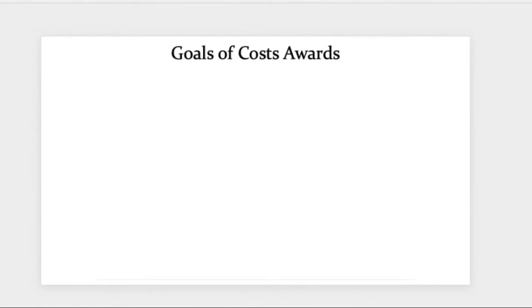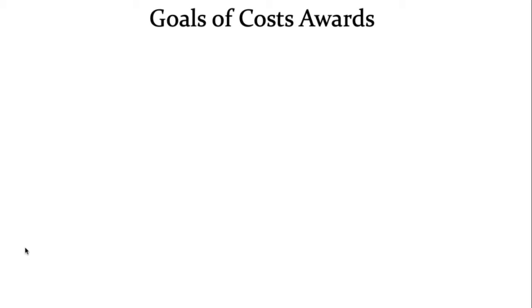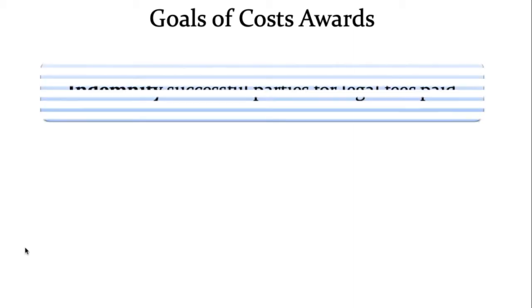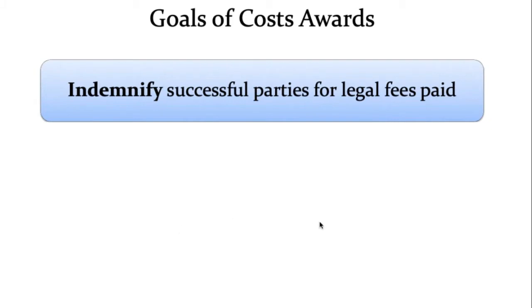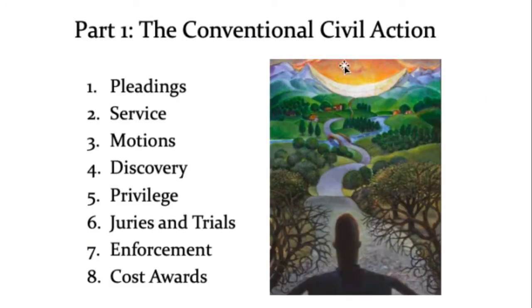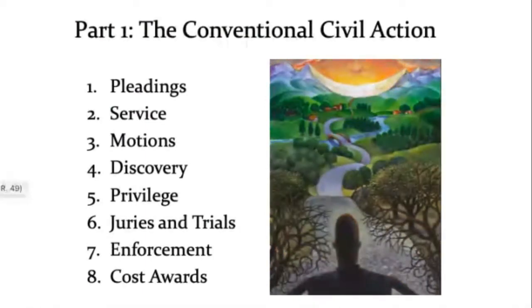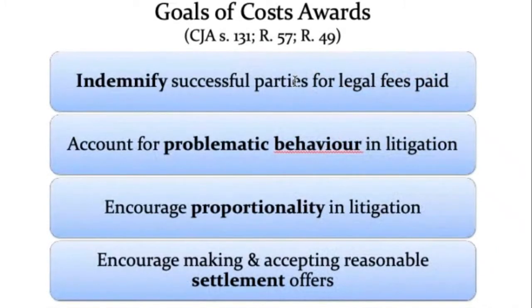There are four specific goals that a cost award can pursue. The first is to indemnify successful parties for legal fees that they have paid. The fact that you've been given an award that compensates you for all the wrong that happened before you sued still leaves you out of pocket because of the cost of walking that road in the first place. This is called indemnification — we indemnify successful parties for the legal fees they had to pay.